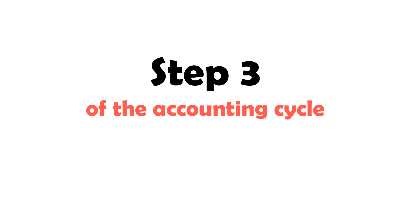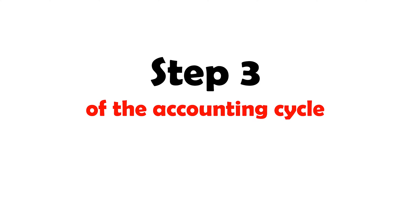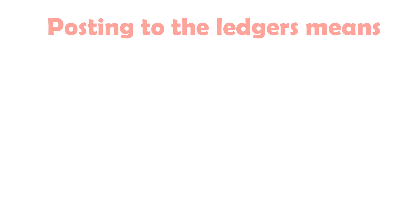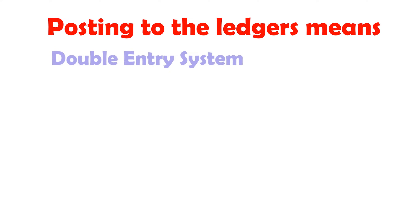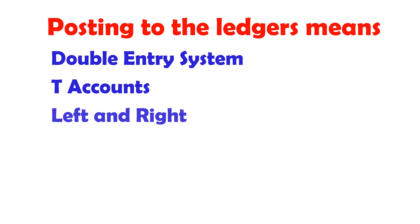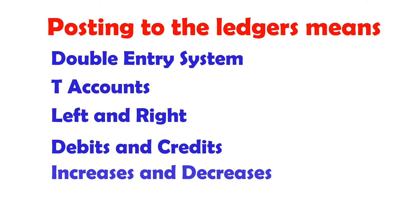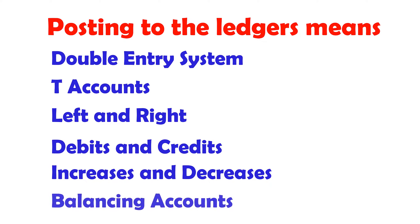Step 3 of the accounting cycle: ledgers. The three ledgers are the sales ledger, purchases ledger, and general ledger. Posting to the ledgers means using the double entry system — T-accounts with left and right sides, debits and credits, increases and decreases, and balancing accounts.